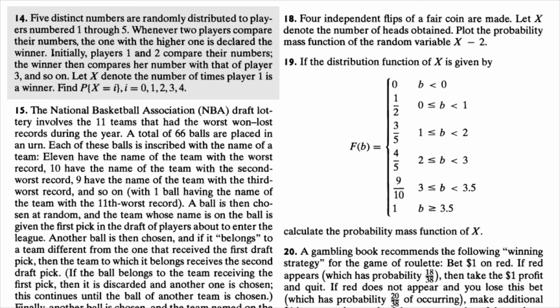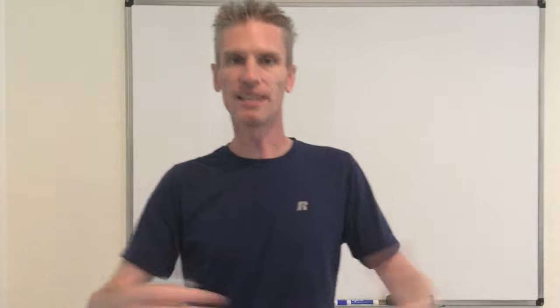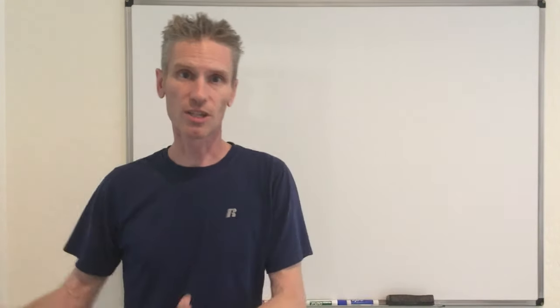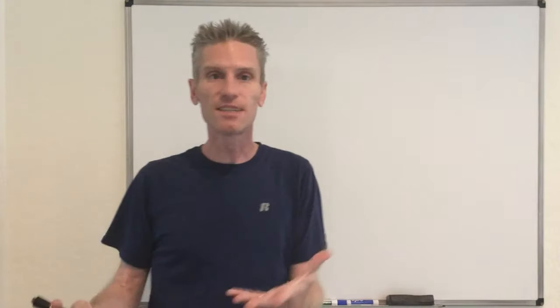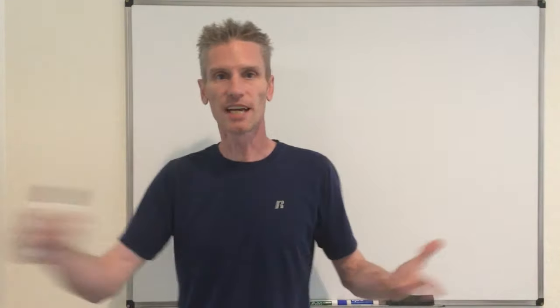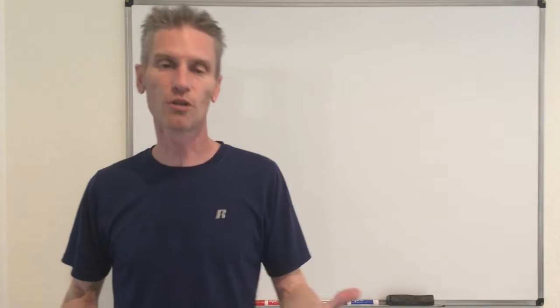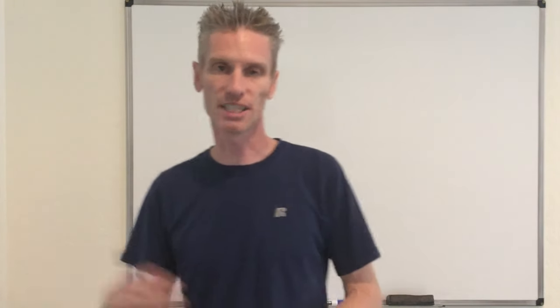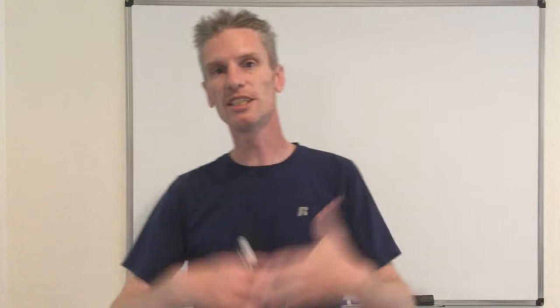They again compare their numbers, and whoever has the largest number continues playing. So that's our random experiment. The sample space is basically the set of all possible rankings of the numbers looking at the players, so you have five factorial possible outcomes in our experiment.